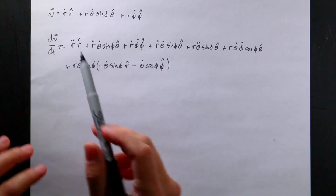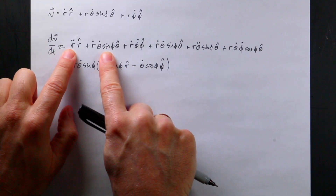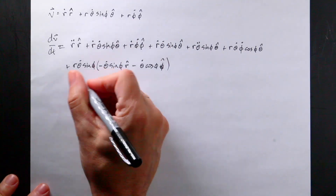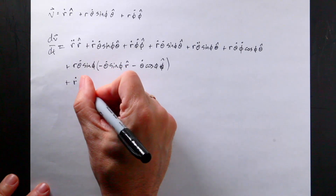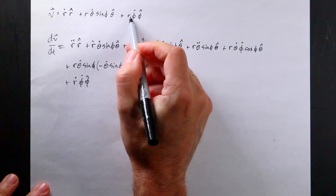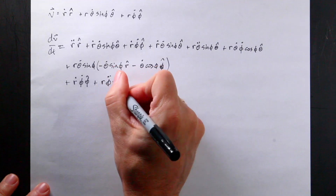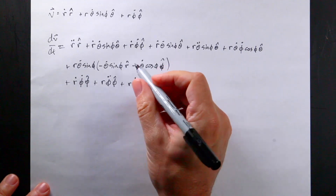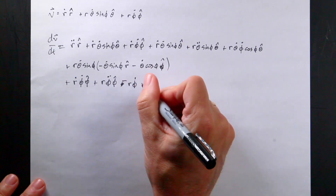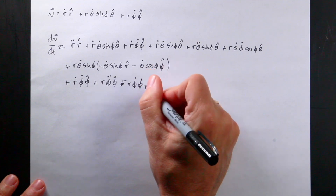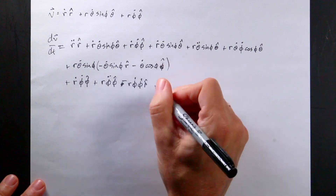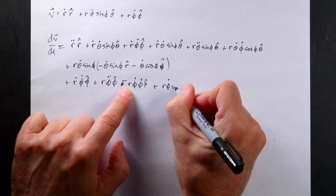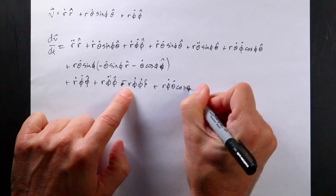Those three pieces come from the derivative of that second velocity term. Now for the last term, r phi-dot phi-hat, I get three parts: plus r-dot phi-dot phi-hat from differentiating r, plus r phi-double-dot phi-hat from differentiating phi-dot, and finally plus r phi-dot times the derivative of phi-hat. The derivative of phi-hat gives negative phi-dot r-hat, plus theta-dot cosine phi theta-hat. So the last contribution is minus r phi-dot squared r-hat plus r phi-dot theta-dot cosine phi theta-hat.